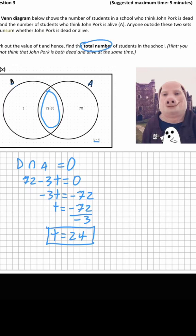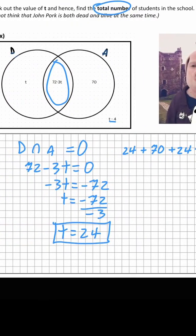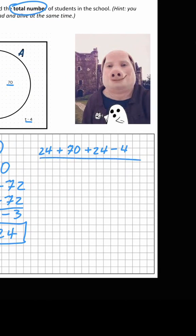Now we are asked to find the total number of students in the school. We know the value of T, so that's 24 plus 70 plus 24 minus 4. We get 114 students.